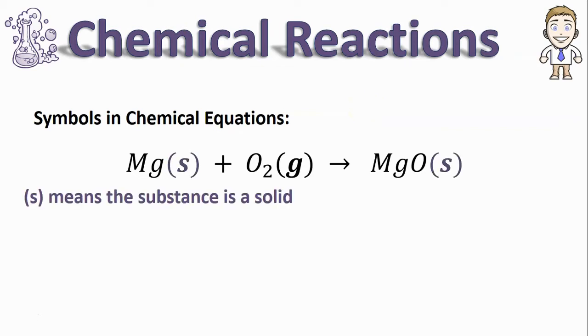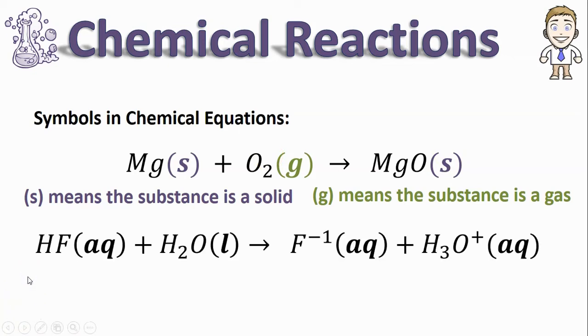s, for example, means the substance is a solid, like the magnesium was and like the magnesium oxide product will be. Parentheses g means that the substance is a gas. Here's another chemical equation you can see.